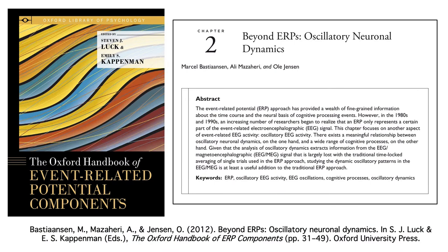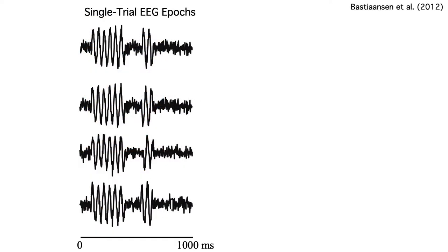If you'd like to learn about the relationship between EEG oscillations and ERPs, there's a chapter in the Oxford Handbook of ERP Components. Here's the first figure from that chapter. We're looking at four single-trial EEG epochs following a stimulus. These are simulated data, and the neural response is unrealistically large relative to the noise so that we can see what's going on.